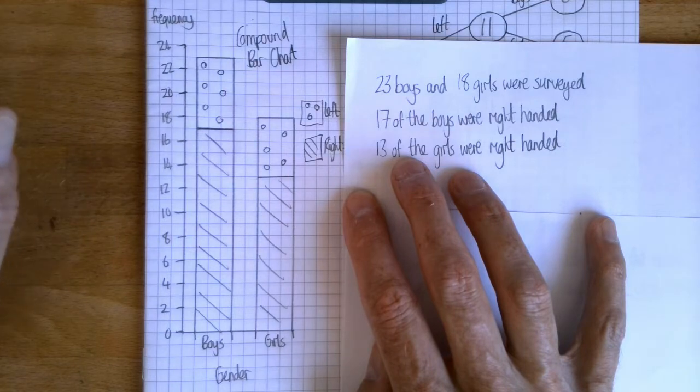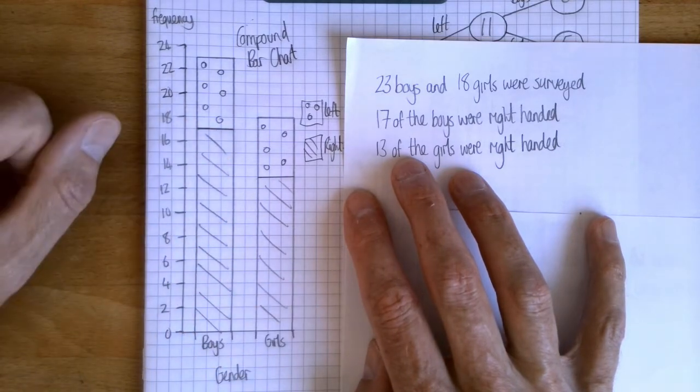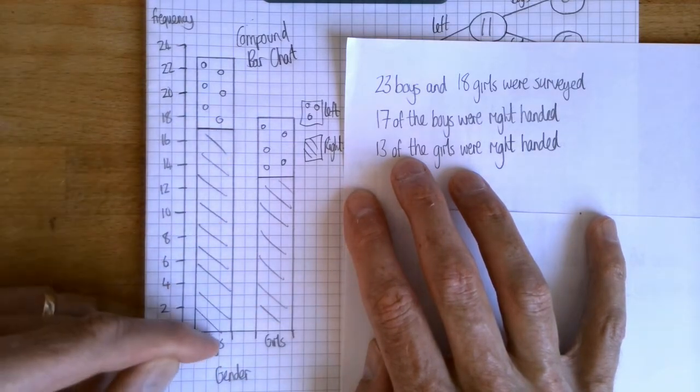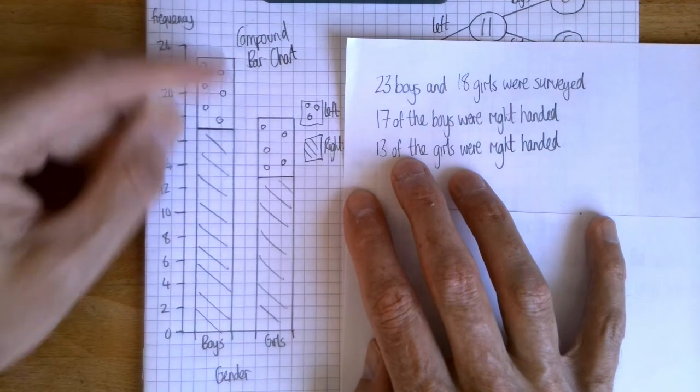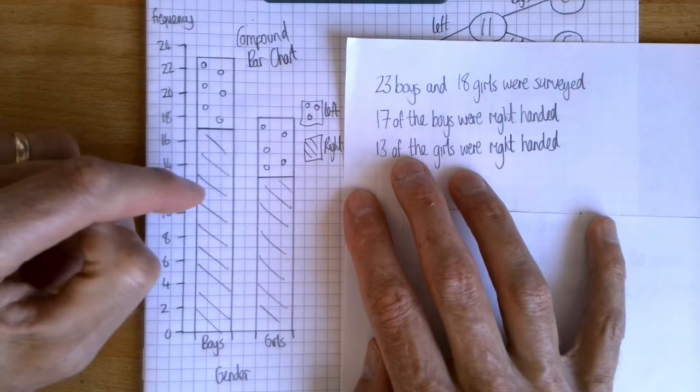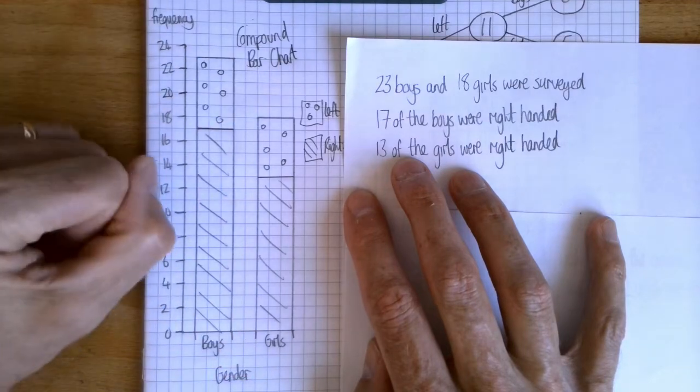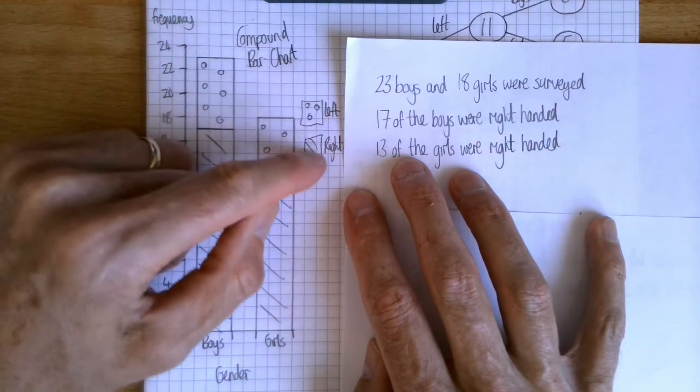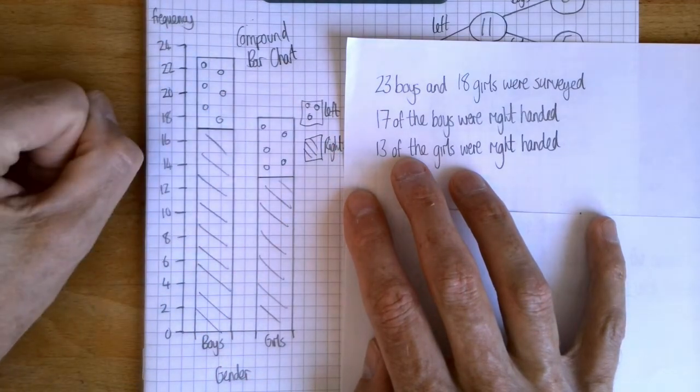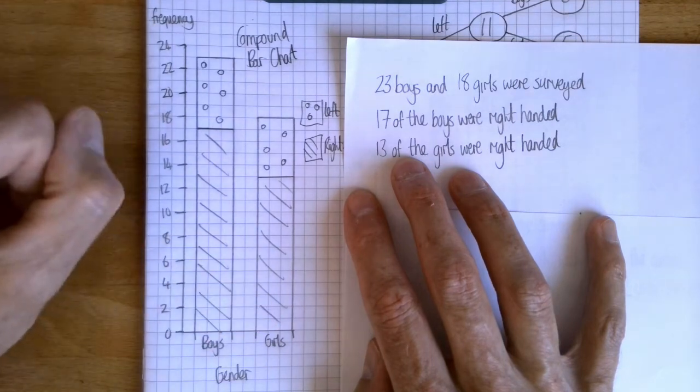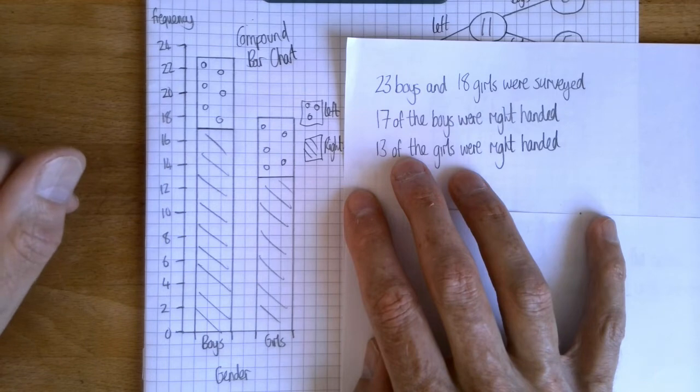Now of course, just like with the frequency trees, I could have drawn the compound bar chart differently. I could have had one bar for left-handed people and one bar for right-handed people, and those bars would have been split into boys and girls correspondingly. And my key would have been boys and girls rather than left and right. So again I've got a choice and I'm not saying one way is better than the other. Both are perfectly valid.